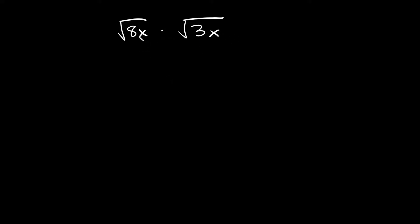So I basically have a bunch of stuff under a radical times more stuff under a radical. What you want to do here is combine all of it into just one big radical symbol, and then you're going to combine everything under it. So we have 8x times 3x, so that's what you're going to put there.